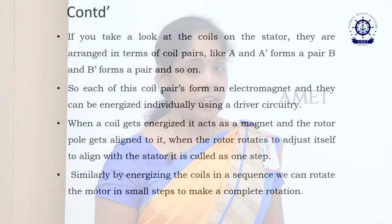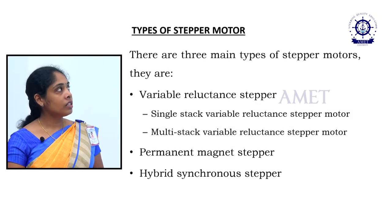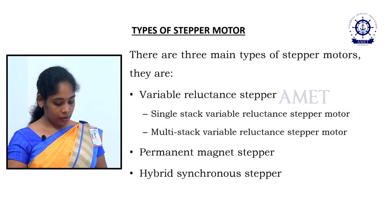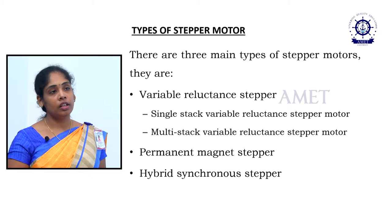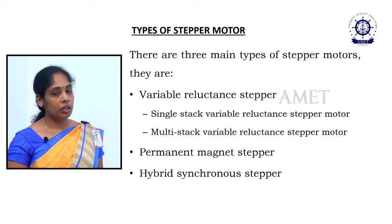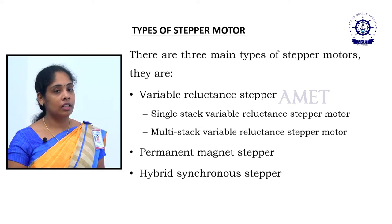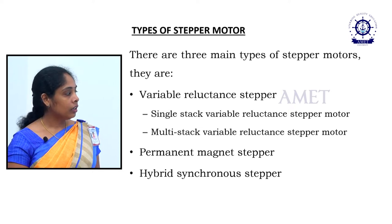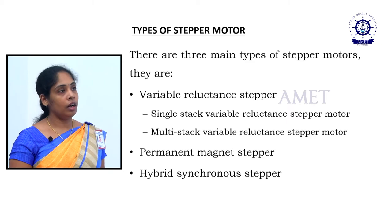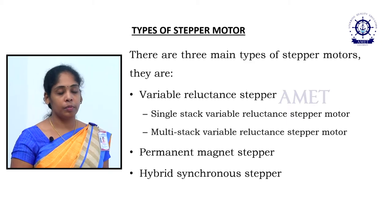By energizing the coils in sequence, we can control the motor in small steps to complete a full rotation. We should concentrate on the sequence circuit to rotate the motor in any precise steps, revolutions, or degrees. The stepper motor is divided into three types: variable reluctance stepper motor (with single stack and double stack variants), permanent magnetic synchronous motor, and hybrid synchronous stepper motor.